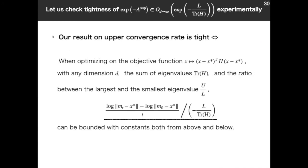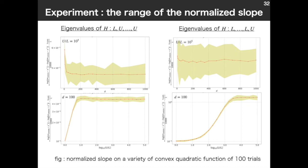Let's check tightness of our upper-convergence rate order. If our result on upper-convergence rate is tight, it holds, when optimizing on the objective function of this form, convex quadratic function, with any d, with any trace of H, with any U over L, this term can be bounded with constants from above and from below. What's this term? This is average slope divided by this order. This order is what is suggested from our result. So, let's say this is normalized slope and see how it is on a variety of convex quadratic functions changing d, trace of H, or U over L.